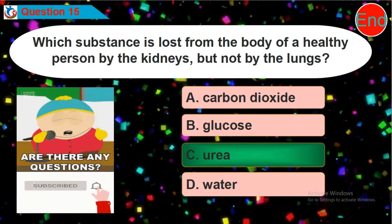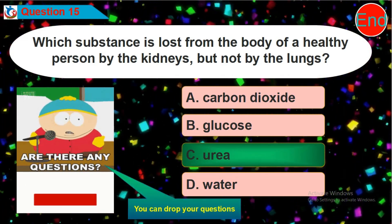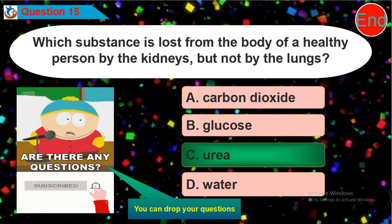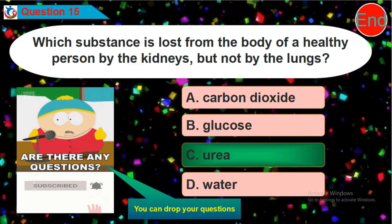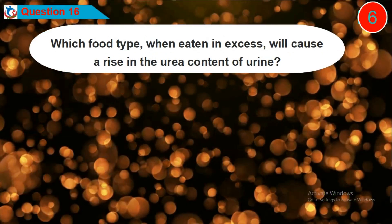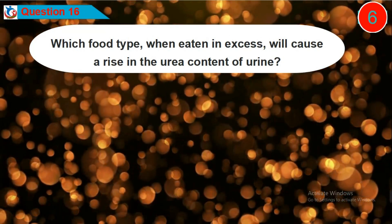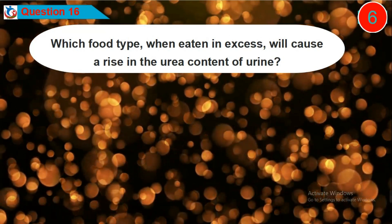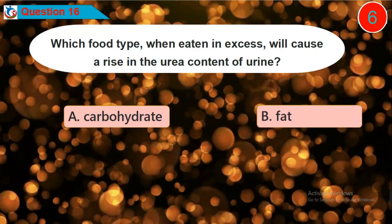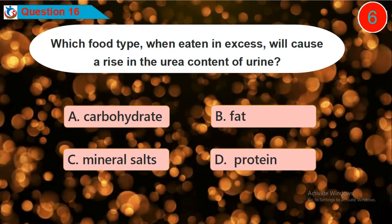Please like this video, subscribe to this channel, and click the bell button — it's totally free. Do not forget to drop your comment in the comment section. Thank you. Question 16: Which food type, when eaten in excess, will cause a rise in the urea content of urine? Is it option A, B, C, or D?